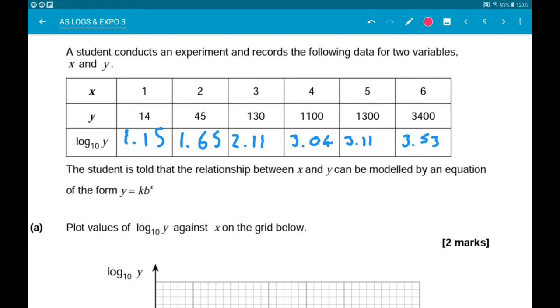Part A wants us to plot values of log10y against x on the grid below. Okay, so I've already done what you need to do first. That is find the log10y values in the table. So on your calculator, just use the log and you're putting in the y values. So make sure you get the same as I've got here.